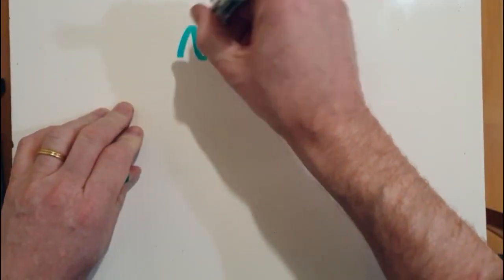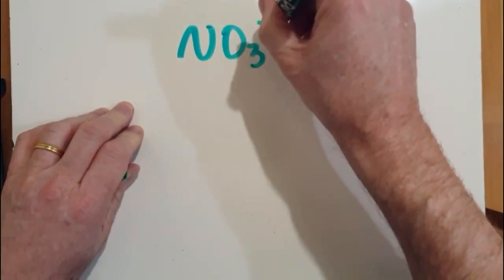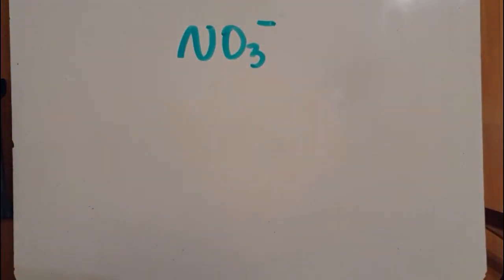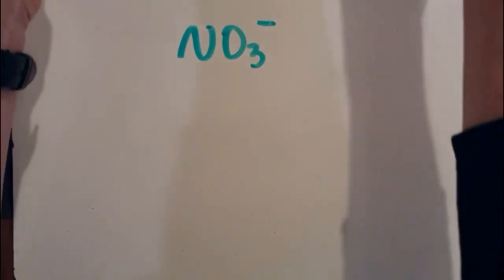Okay, the Lewis structure for the nitrate ion, NO3-. Well, first of all, you want to know the total number of valence electrons we're playing with here.